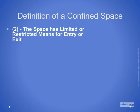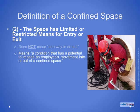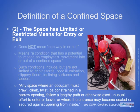The second criteria in OSHA's definition is that the space has a limited or restricted means for entry or exit. Contrary to popular belief, this does not mean the space has only one way in or out. According to the definition in 1926.1202, limited or restricted means for entry or exit means a condition that has a potential to impede an employee's movement into or out of a confined space. Examples include, but are not limited to, trip hazards, poor illumination, slippery floors, inclining surfaces, and ladders.